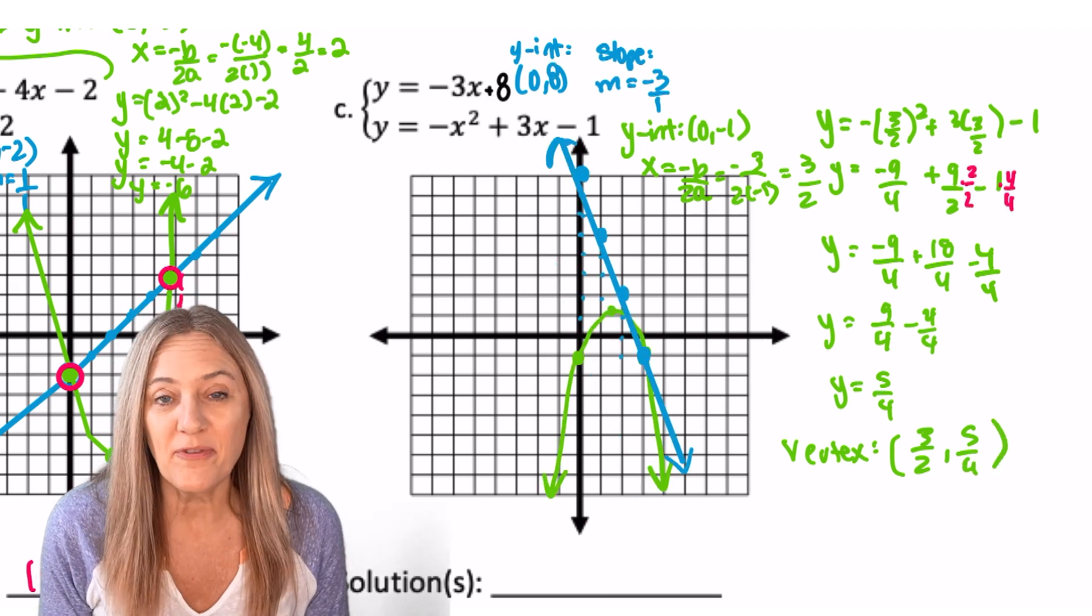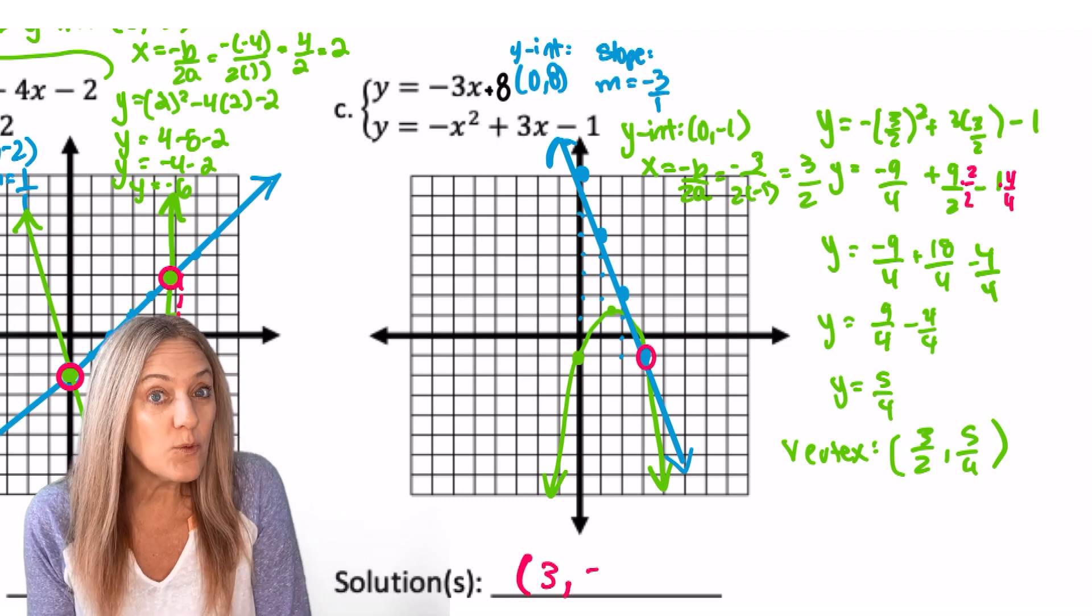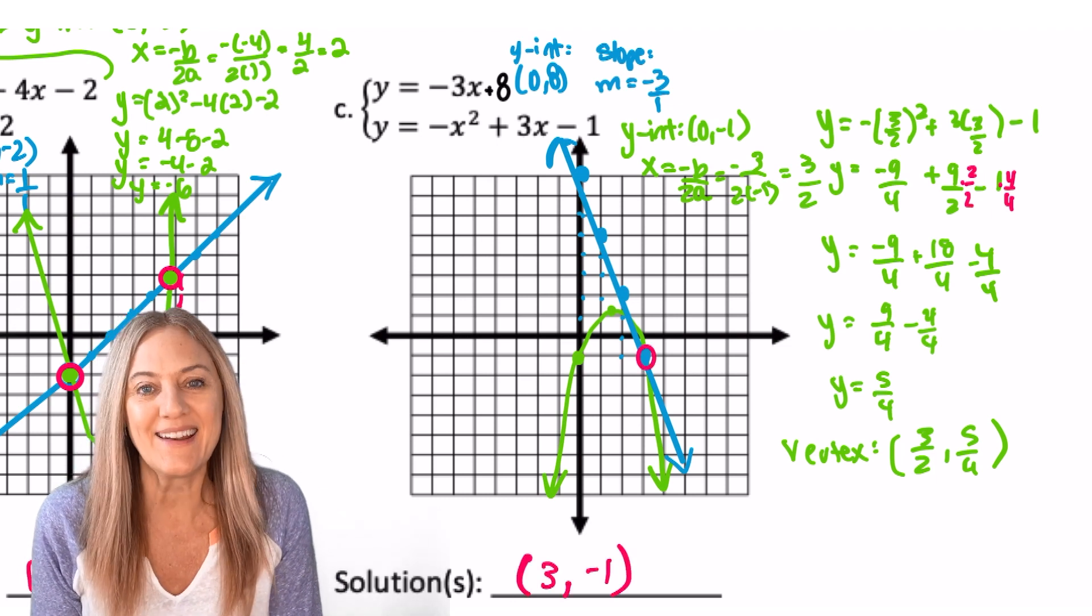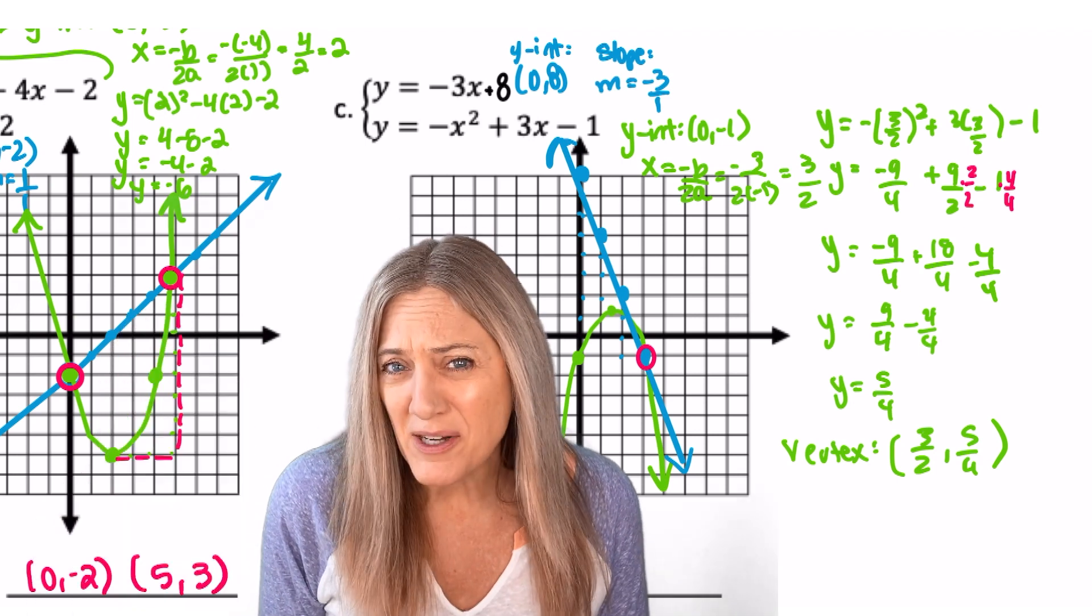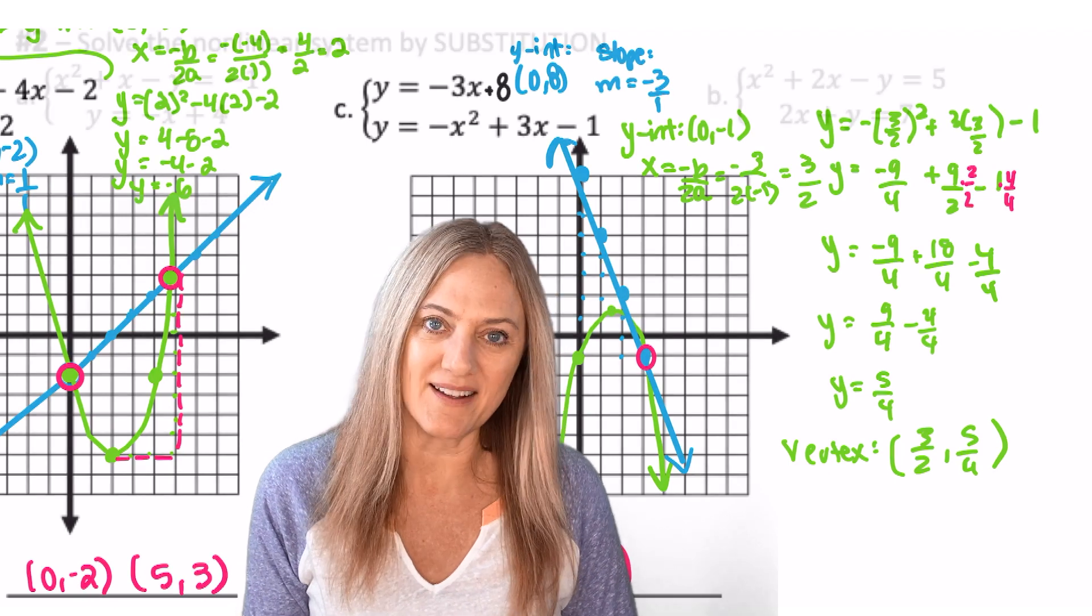Wow, quite a bit of fraction work there to get our vertex, but fortunately they intersected at that reflected y-intercept point, 3, negative 1. Is graphing our best method? Not always. So let's look at how to solve these algebraically.